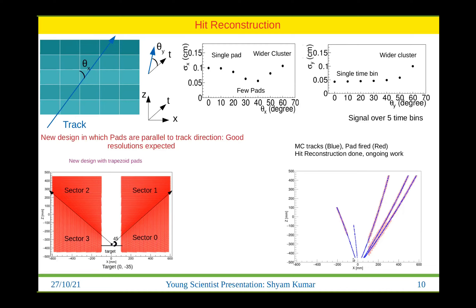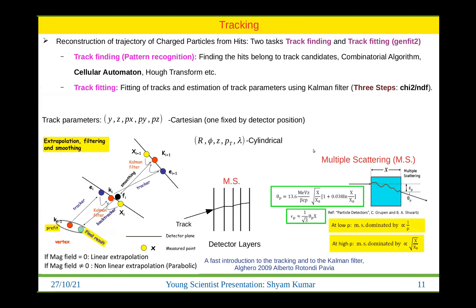We arrived at a new design with four sectors — sector zero, one, two, and three. The main idea is to have the tracks parallel to the pad direction so the angle is always small. This way we avoid the region of increasing resolution degradation. I then did the simulation and digitization with hit reconstruction: the blue shows the Monte Carlo points, and you can see the fired pads and the reconstructed positions.